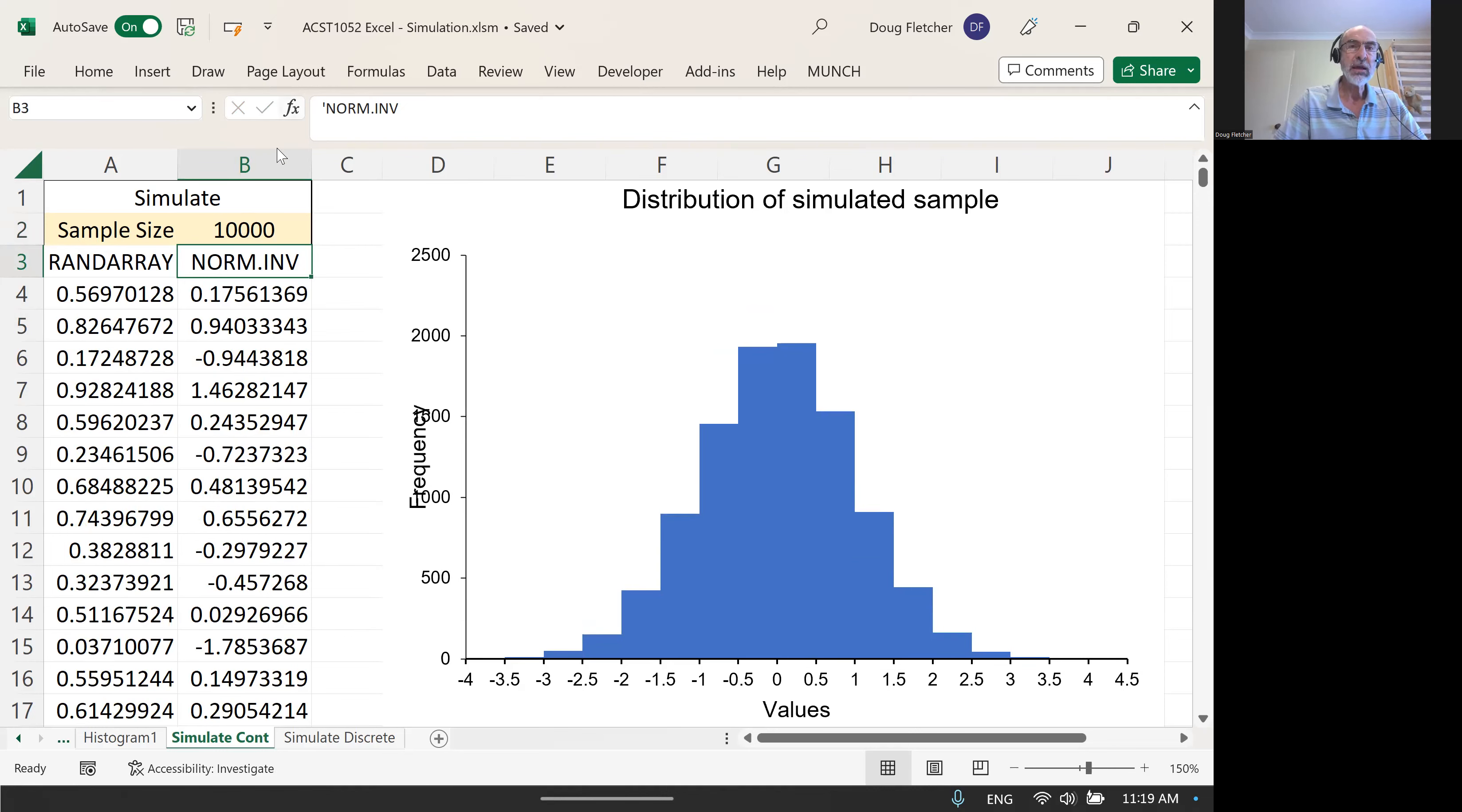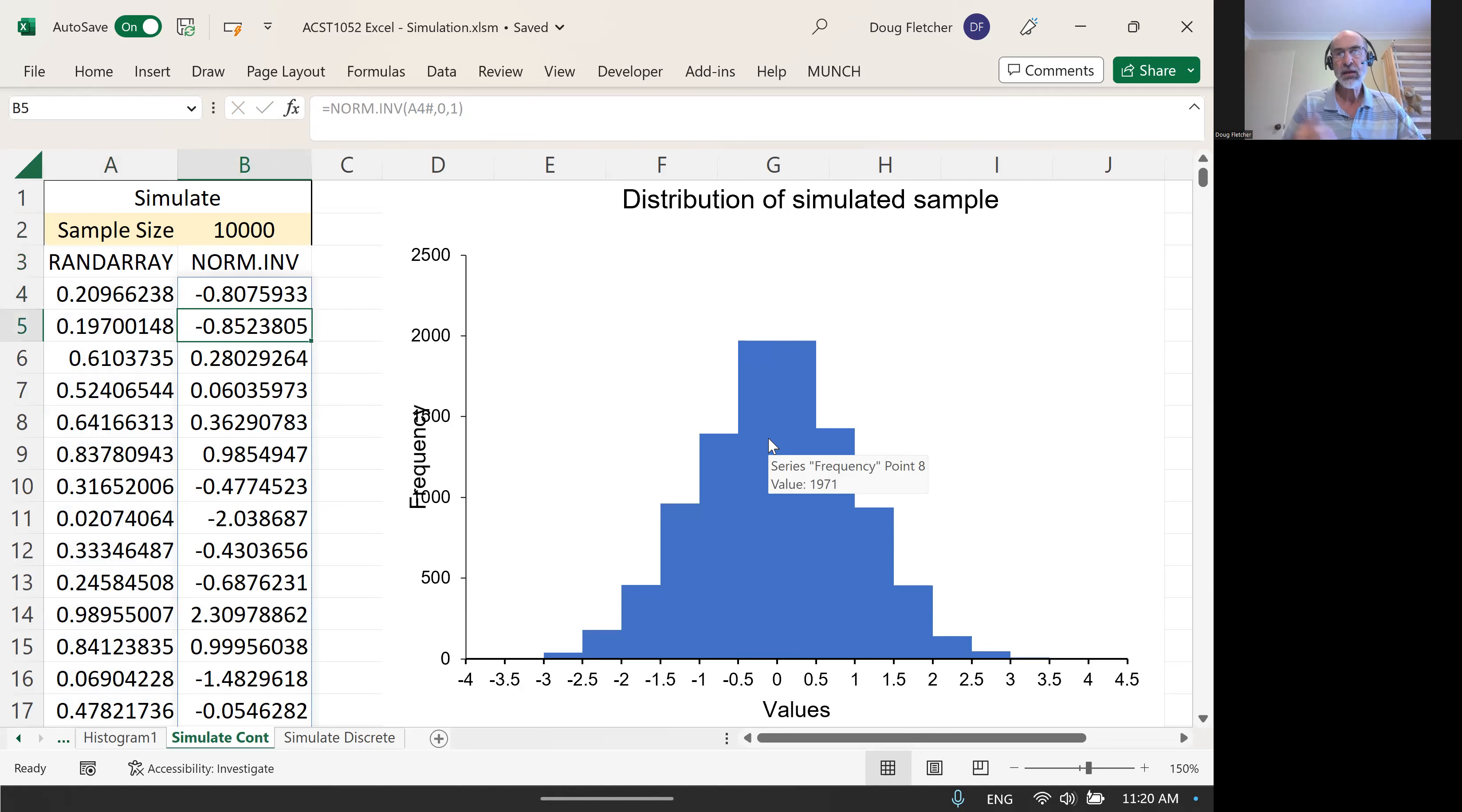Just to note, RAND.ARRAY here, that one command is generating this whole list of 10,000 values. Then for NORM.INV, this one command is taking all those 10,000 values, that is cell A4 with everything else that comes with it, and then doing the NORM.INV. So you've got just two commands there, and that's generating 10,000 normal random variates.